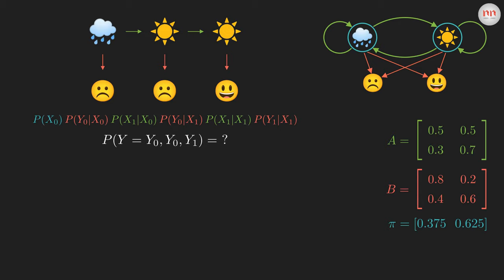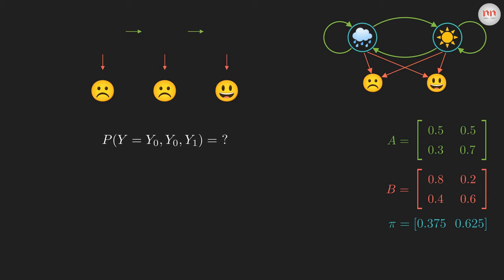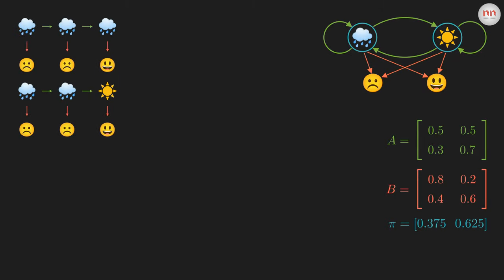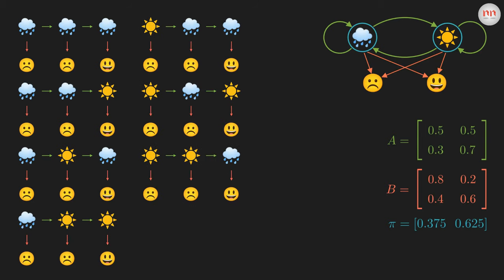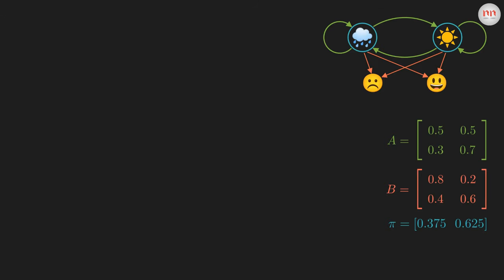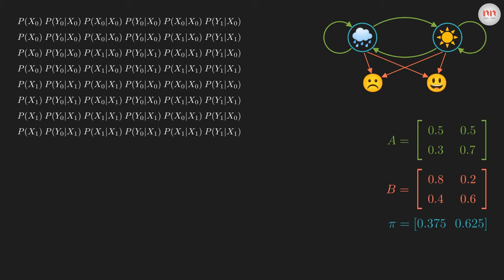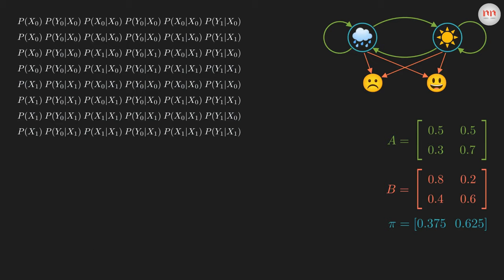Can you find how many such sequences there are in total? We have three places and two choices for hidden states, so there exist eight possible sequences of hidden states. Let's visualize them. Here are the probabilities corresponding to each one of them. To find the probability of Y equals Y0, Y0, Y1, we need to add all these eight long products. If you are going to follow this naive way, you have to do this huge calculation. If you count the number of multiplications, you will find it's of the order of t times n to the power t, where t is the length of the observed sequence and n is the number of hidden states. That means the time complexity increases exponentially with the number of hidden states.